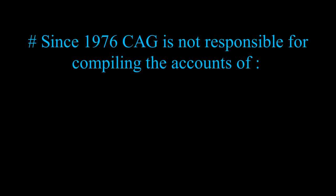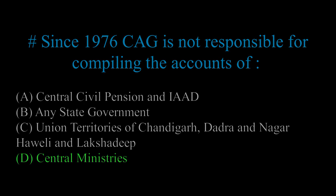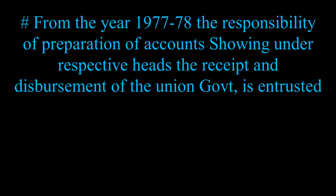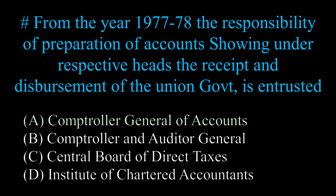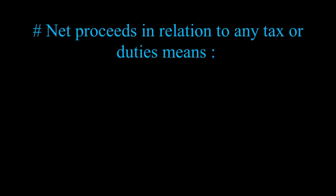Since 1976, CAG is not responsible for compiling the accounts of? Comptroller and Auditor General: from the year 1977-78, the responsibility of preparation of accounts showing under respective heads the receipts and disbursement of the union government is entrusted to? Net proceeds in relation to any tax or duties means?